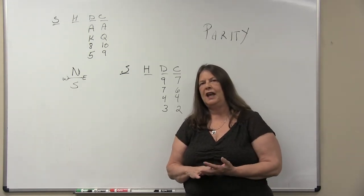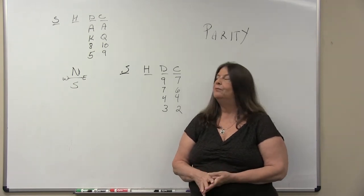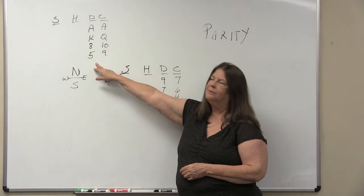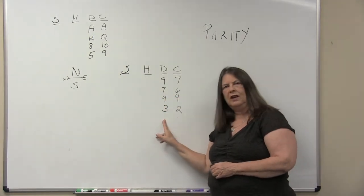So first we're going to look at the idea of parity when dummy is visible. Here we have in diamonds the ace, the king, the eight, and the five. And the nine, seven, four, three is in our hand.